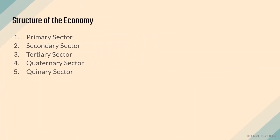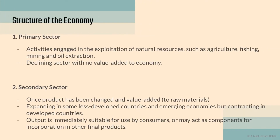The structure of the economy consists of five different sectors: the primary, secondary, tertiary, quaternary, and quinary sectors. The primary sector involves activities that engage in the exploitation of natural resources — things like agriculture, fishing, mining, and oil extraction. These are very basic activities and this is a declining sector with no value added to the economy. The goods are usually passed on to the secondary sector. For example, a farmer simply farms five watermelons and sells them — that is the primary sector.